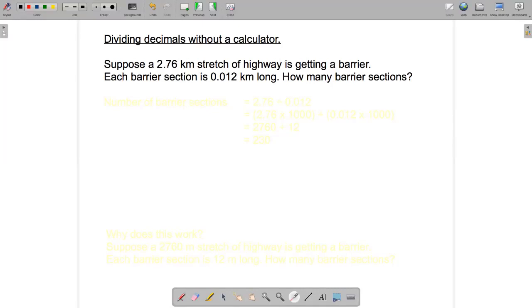So our word problem is the following. Suppose a 2.76 kilometer stretch of highway is getting a barrier. Each barrier section is 0.012 kilometers long. How many barrier sections do we need?